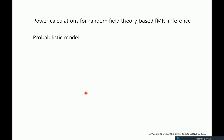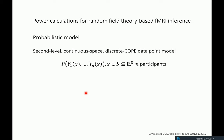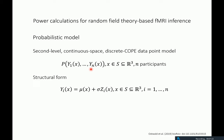To tell you about this work, I'd like to briefly recap the probabilistic model behind random field theory-based fMRI inference. The probabilistic model is the second-level continuous-based discrete contrast of parameter estimate data point model, where for each participant you have one contrast of your beta parameters analyzed at the second level. The model assumes you observe some data everywhere in a 3D search space continuously over space — all random variables, with uncountably many random variables over space for each participant.